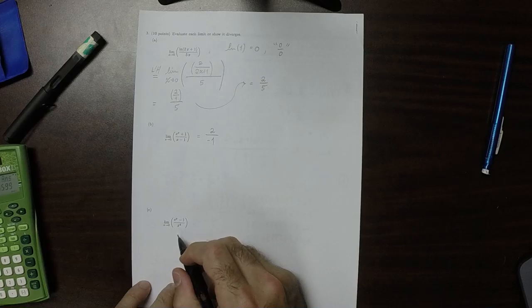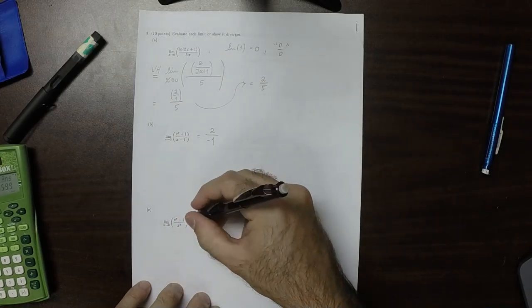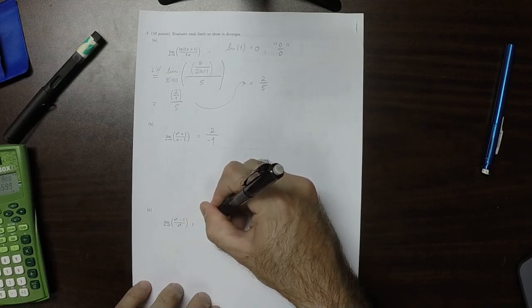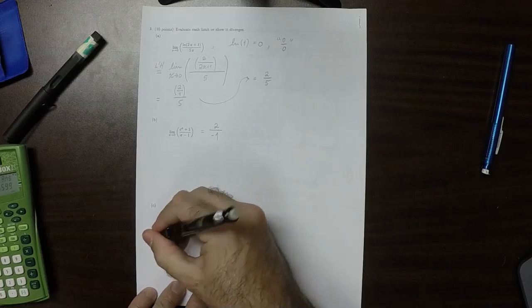Okay, so then for part 3, it is currently in the form 0 over 0. So we can use L'Hopital's rule.